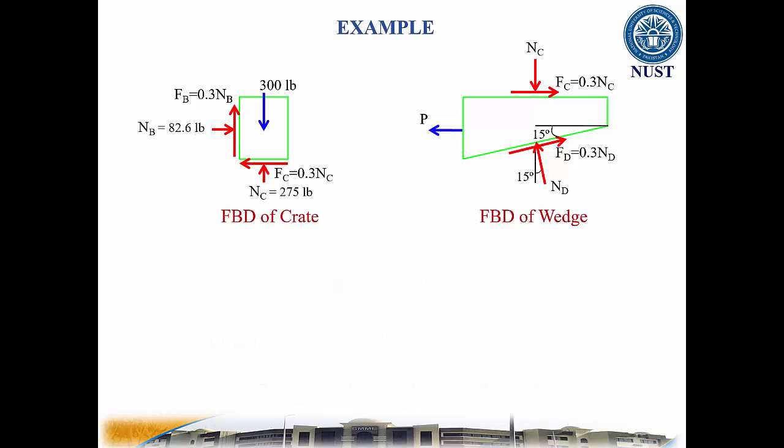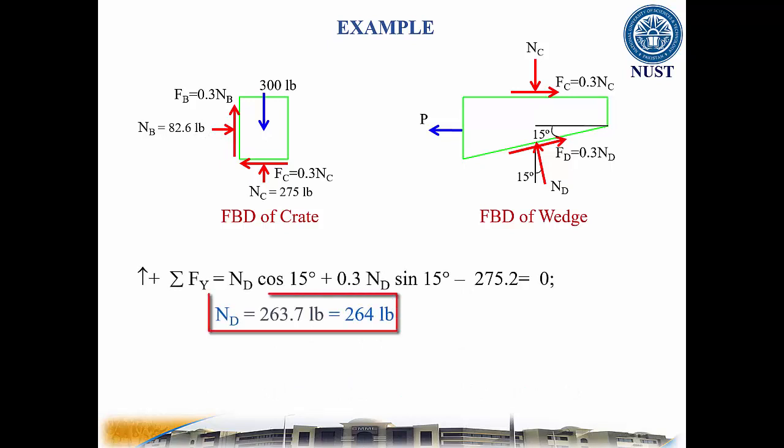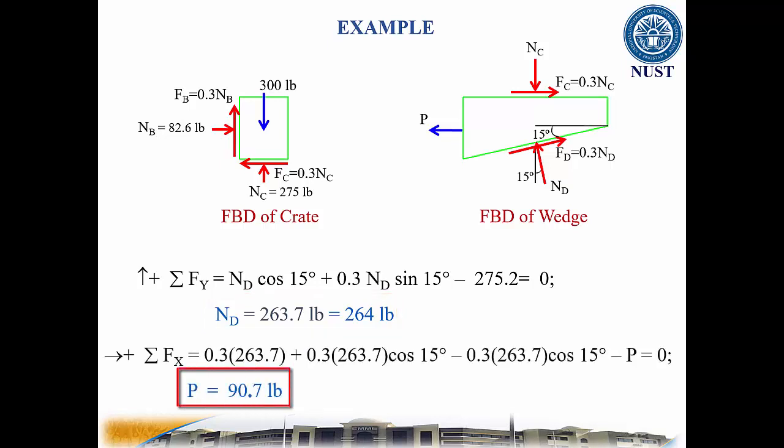Applying the equations of equilibrium to the wedge, first in the y direction, we get Nd equal to 264 pounds. And then in the x direction, it results in P equal to 90.7 pounds. This example concludes here. Thanks for watching.